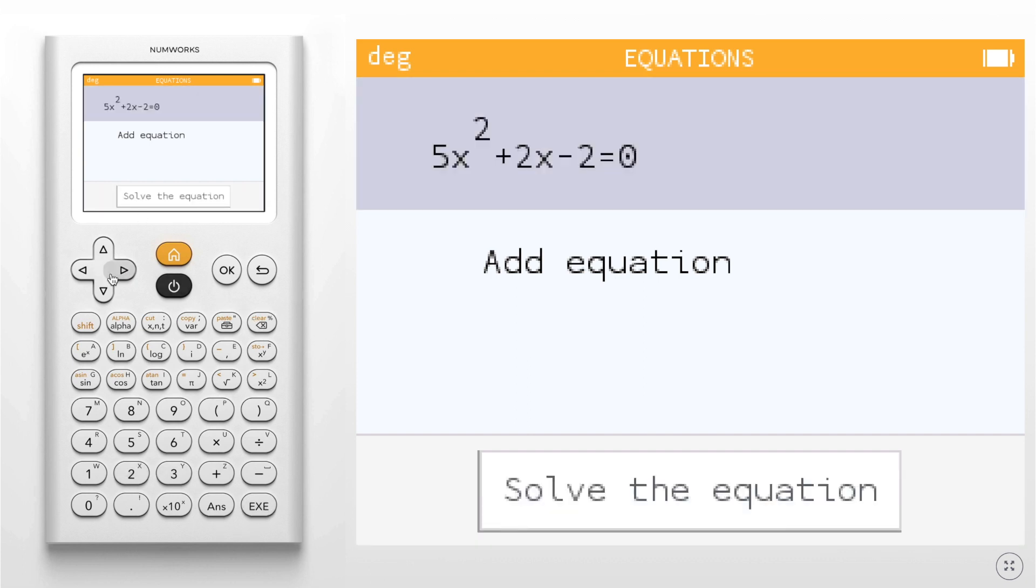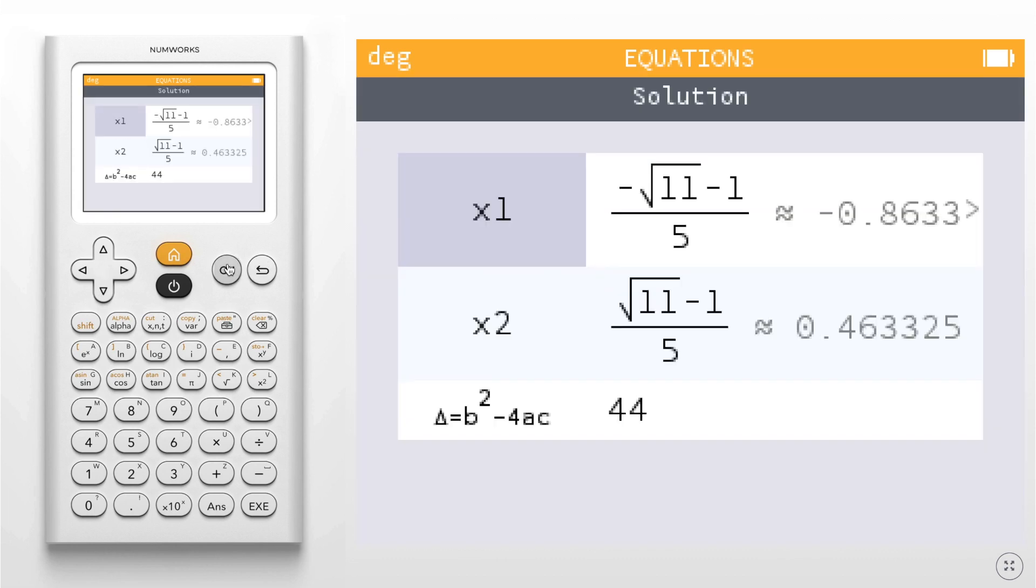I'm going to hit enter, go down to solve the equation and press ok. And here you will see that I have the solutions to my equation along with the discriminant or the delta.